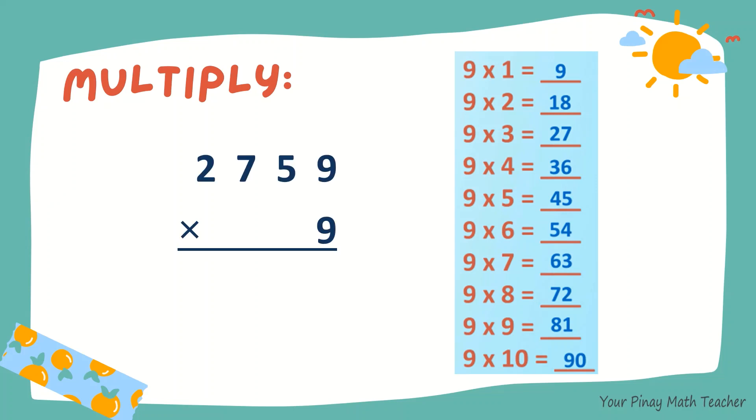The last, 2,759 times 9. 9 times 9 is 81.